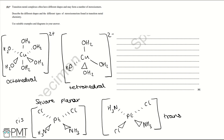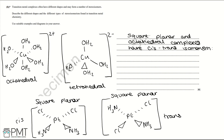Square planar complexes show cis and trans stereoisomerism, but octahedral complexes also have cis and trans stereoisomerism. For this question you don't need to demonstrate both square planar and octahedral cis-trans isomerism, but for completeness both will be shown.